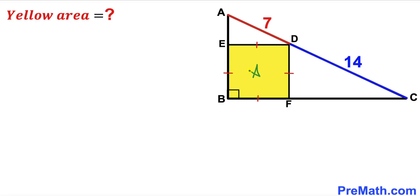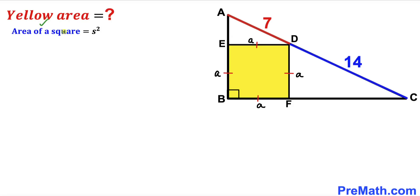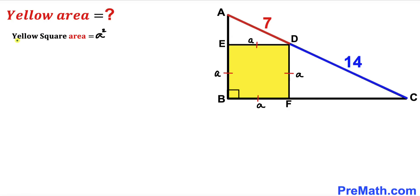Let's focus on the yellow square BFDE. Since all side lengths are equal, I'm going to label all sides as lowercase a. Since we want to calculate the area of this yellow square, let's recall the area formula: area equals s squared, where s is the side length. In our case the side length is a, so the area of this yellow square is a squared.